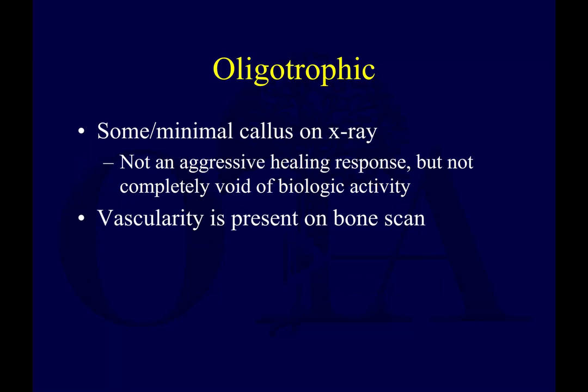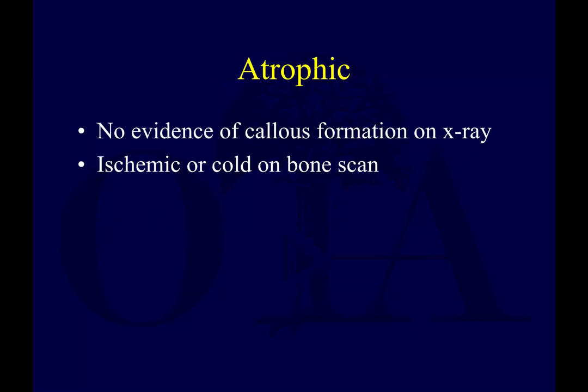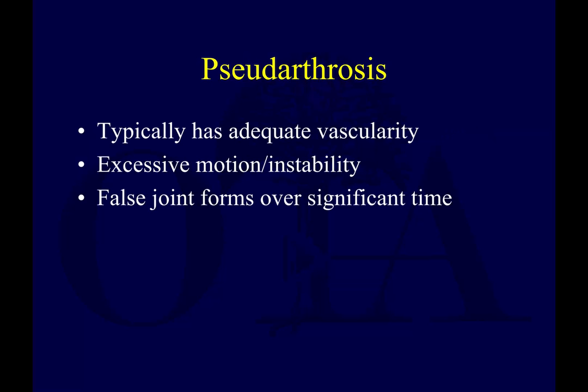Oligotrophic means there is some callus, just not quite hypertrophic — not as aggressive a healing response, but not atrophic either. There's some vascularity there. Atrophic means there's no evidence of callus. It's cold on a bone scan, indicating ischemia, and there's typically a vascular problem. It could also be infected.